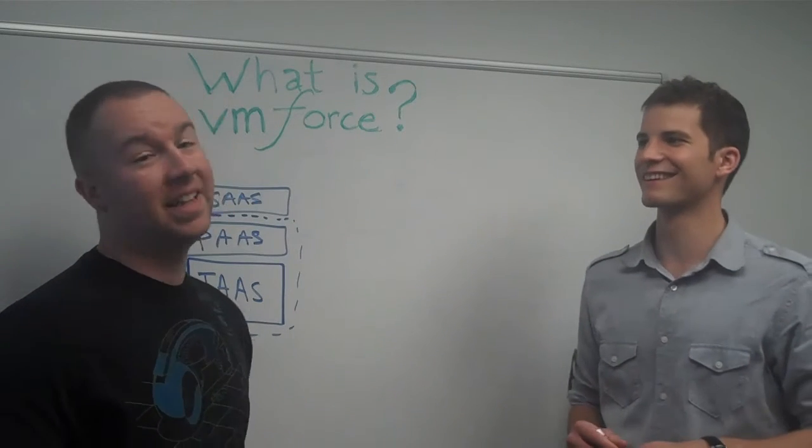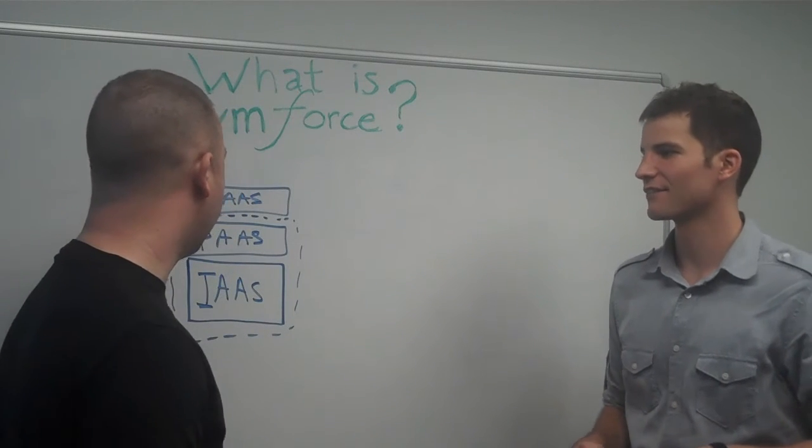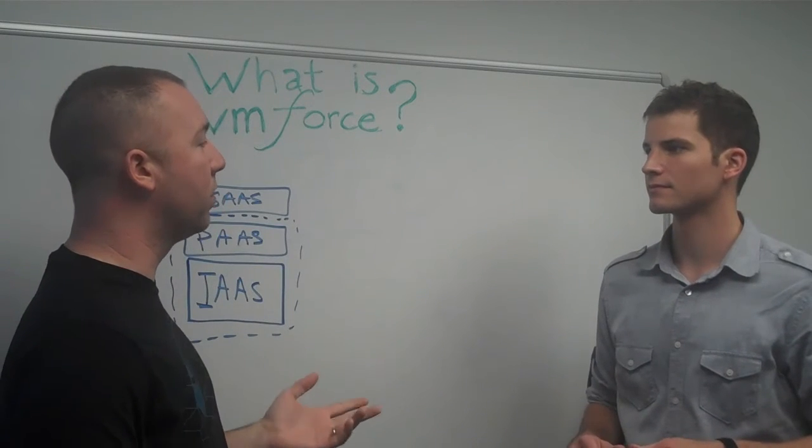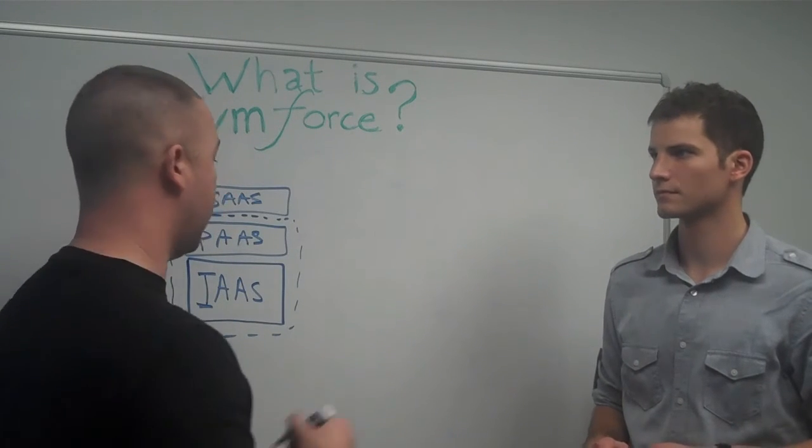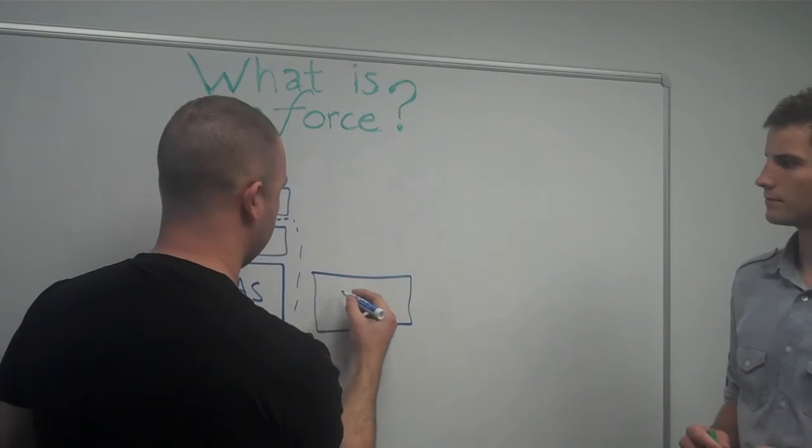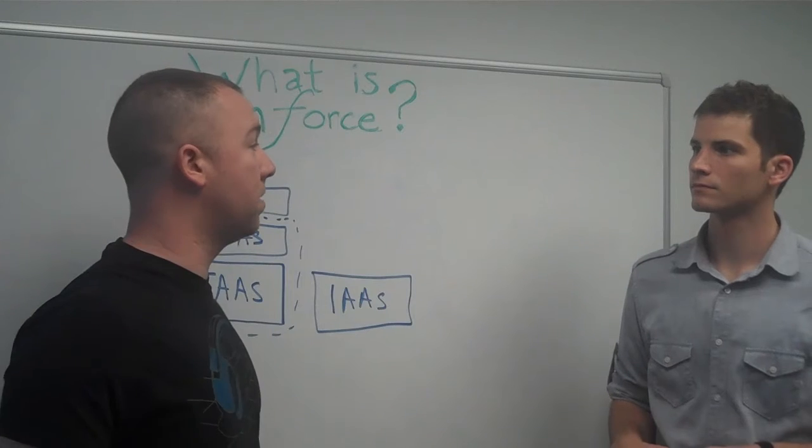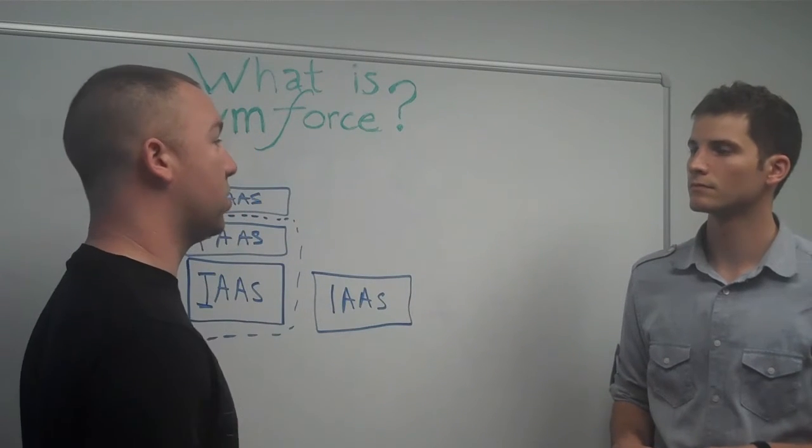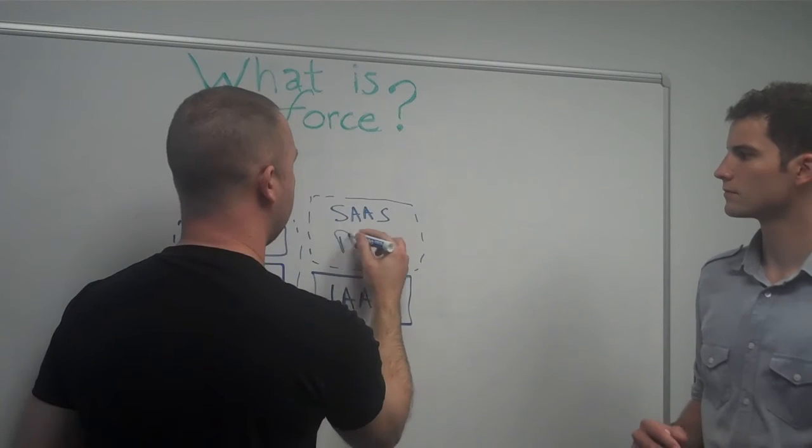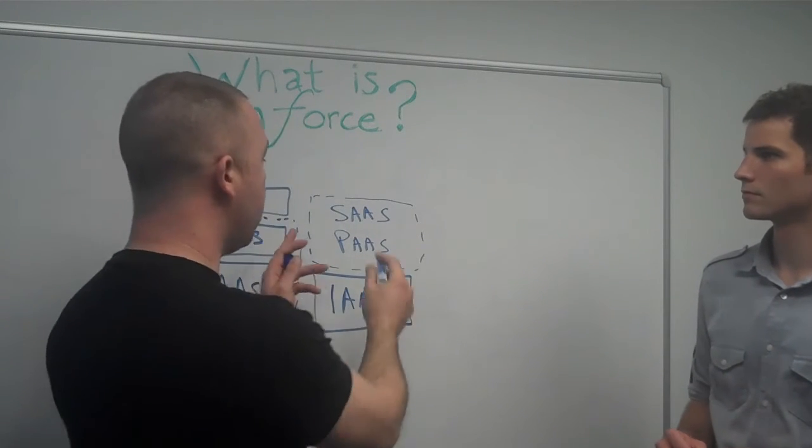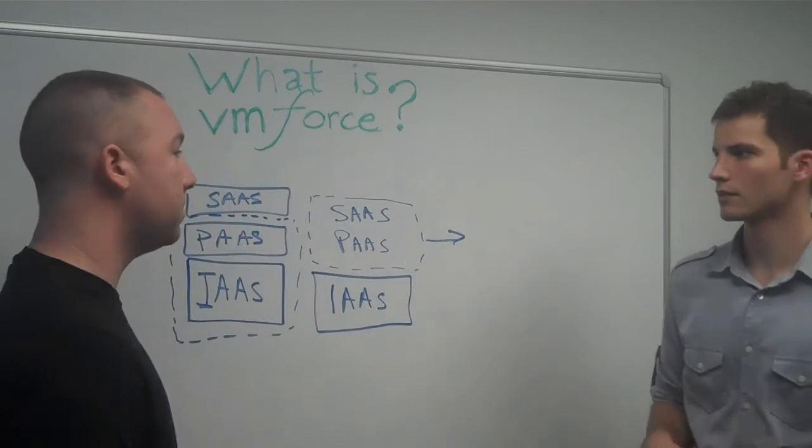So kind of along the same lines, if we were running our Java application on an infrastructure as a service type setup, so let's say this is a VCloud Express provider. So a VCloud Express provider is providing the infrastructure as a service. You would manage the software as a service and the platform as a service, and you can take and pick this up and move it to any infrastructure as a service provider. That makes a lot of sense.